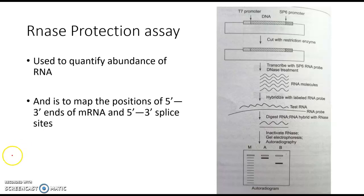So what are the basic steps involved in this assay technique? First of all, we need a plasmid vector, and the second thing is we need a phage promoter. So T7 promoter or SP6 promoter.